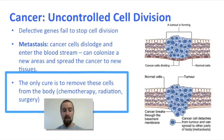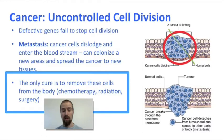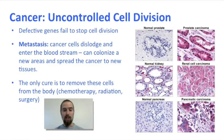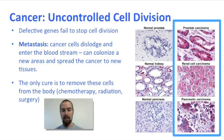The only way currently known to cure cancer is to remove the defective cells from the body, either through surgery or with something like radiation or chemotherapy treatments. Here we see some microscope photos of normal and cancerous cells side by side, in the prostate, kidneys, and pancreas. You should notice that in all cases, the cancerous cells stain darker and appear far more irregular and disorganized than the normal cells.